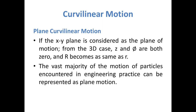If the x-y plane is considered as the plane of motion, for the 3D case z and phi are both 0, and r becomes the same as R because the particle is not moving in the third dimension. So we take z and phi as 0. The vast majority of the motion of particles encountered in engineering practice can be represented as plane motion.